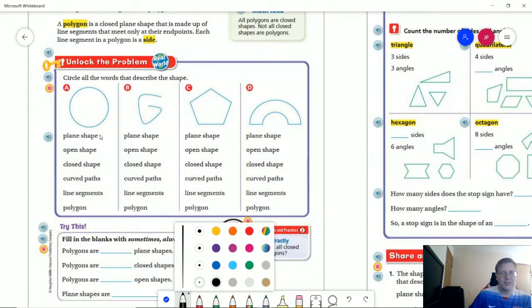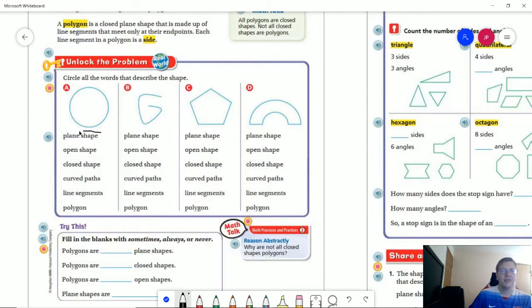All right so assuming that you did that, what we are looking at, this one would be a plane shape. It's a closed shape.